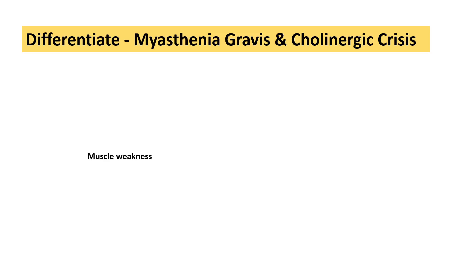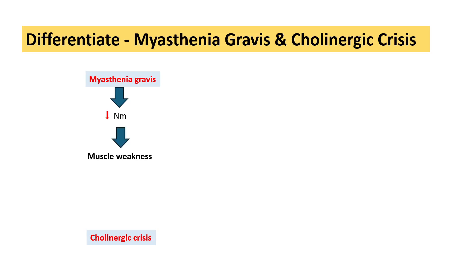Let's understand how to differentiate between these two conditions. Whenever we have muscle weakness, it can be attributed to two things: either myasthenia gravis or cholinergic crisis. In myasthenia gravis, there is decreased neuromuscular junction activity, which leads to a decreased response to acetylcholine at the NMJ, resulting in decreased contractility of skeletal muscle fibers and muscle weakness.